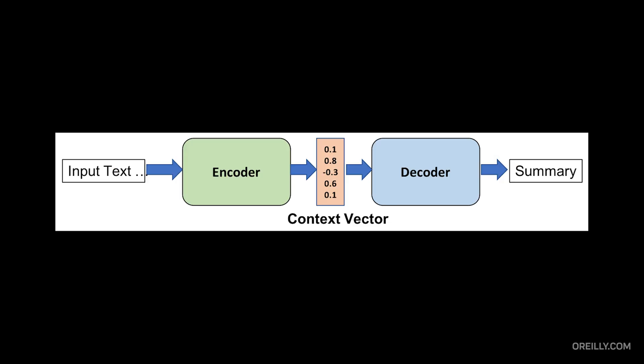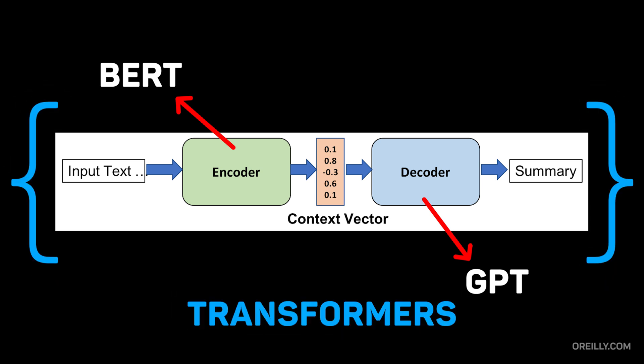A transformer is built from an encoder that understands input and a decoder that generates output. Some models like BERT only use the encoder for understanding text, while others like GPT only use the decoder for generating text. The biggest models use both together for tasks like translation.